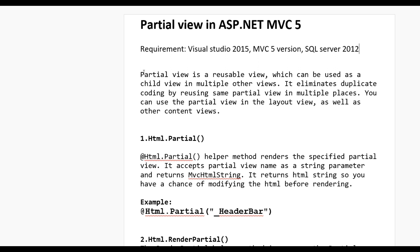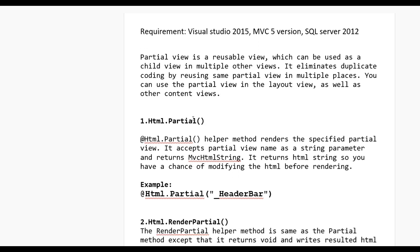A partial view can be used as a child view in multiple other views, eliminating duplicate coding by reusing the same partial view in multiple places. You can use the partial view in the layout view as well as other content views. Partial view can be divided into three types basically.